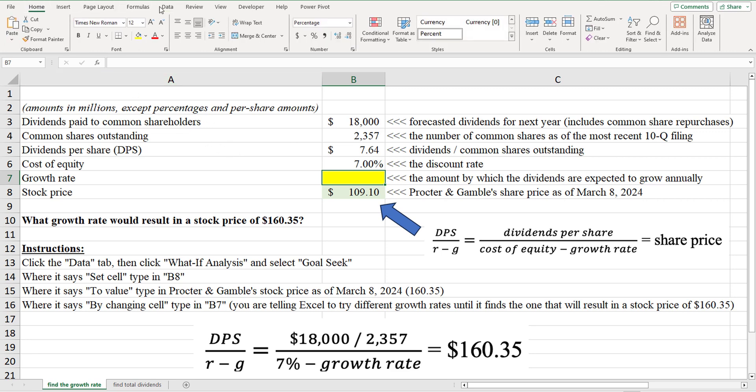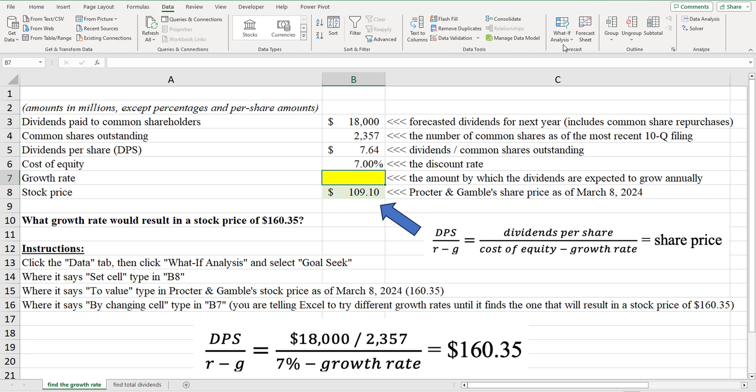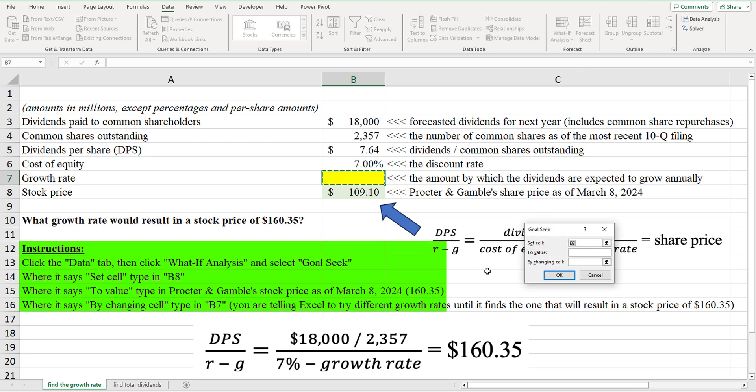So let's assume you're at the home tab. You go up, you click data, and then you go to what if analysis, and you click on goal seek. Now, if you didn't follow all that, I got instructions right here. So don't worry.